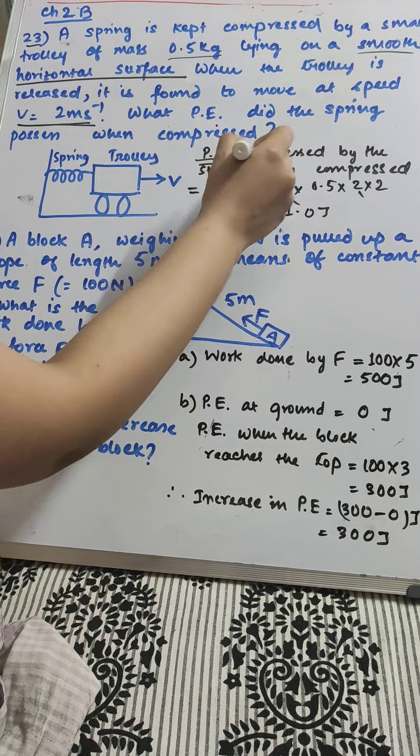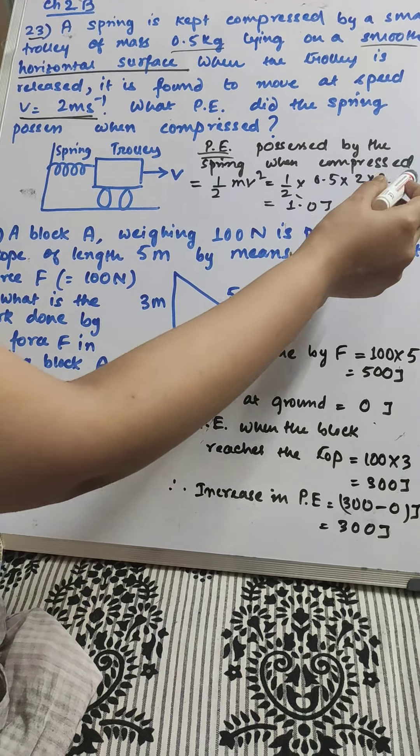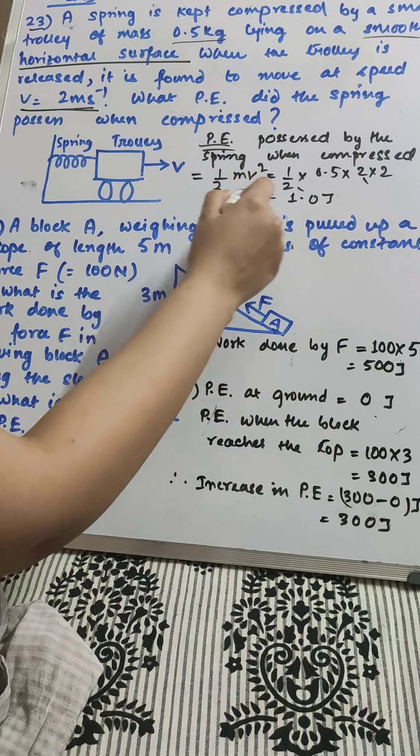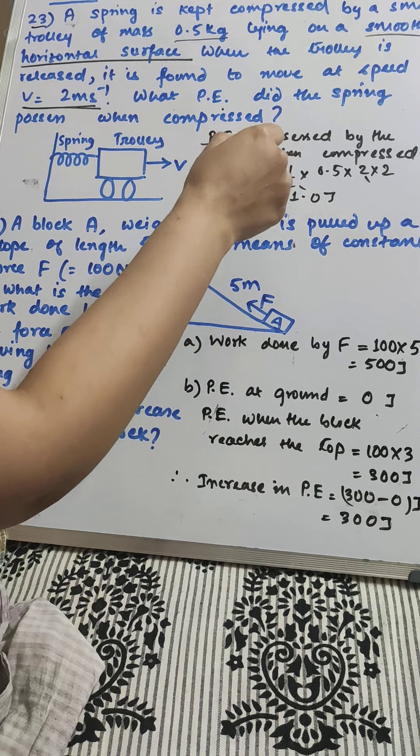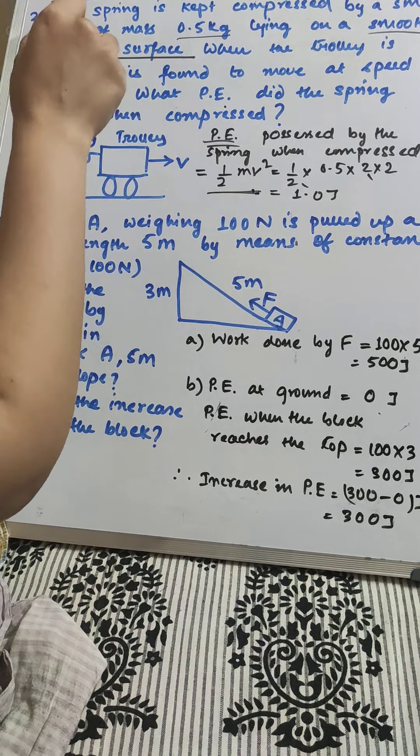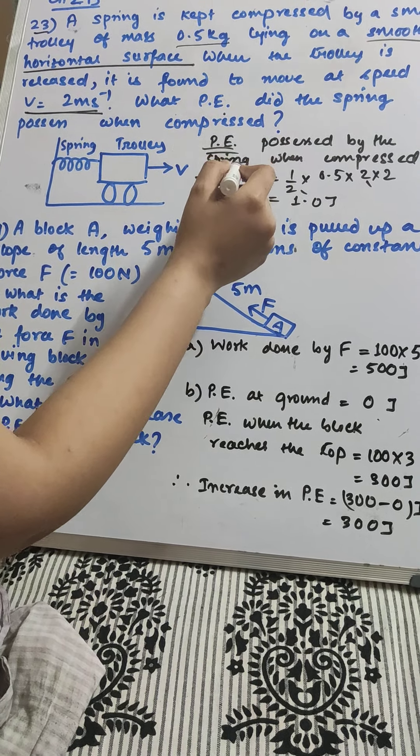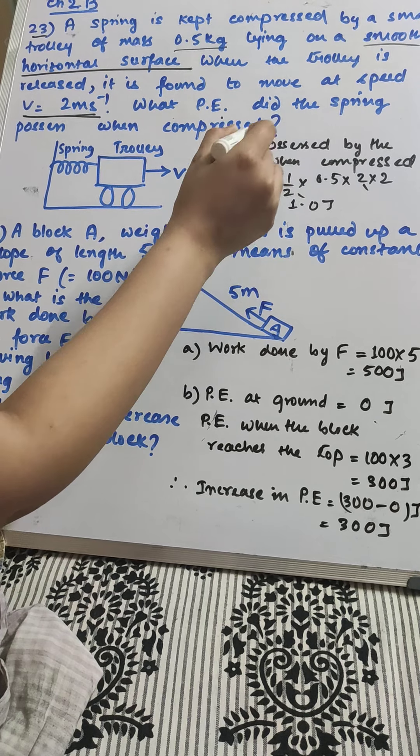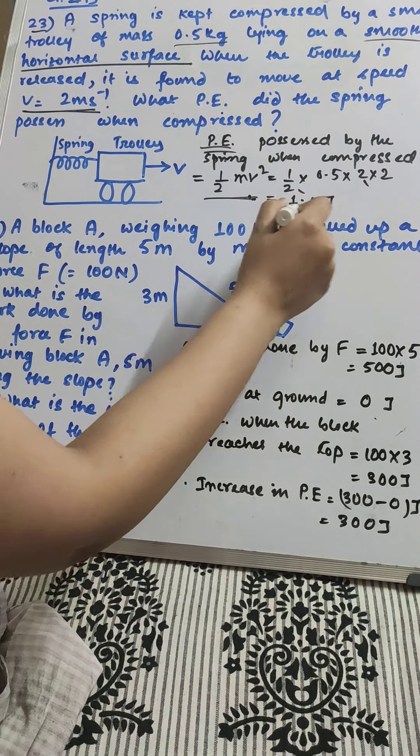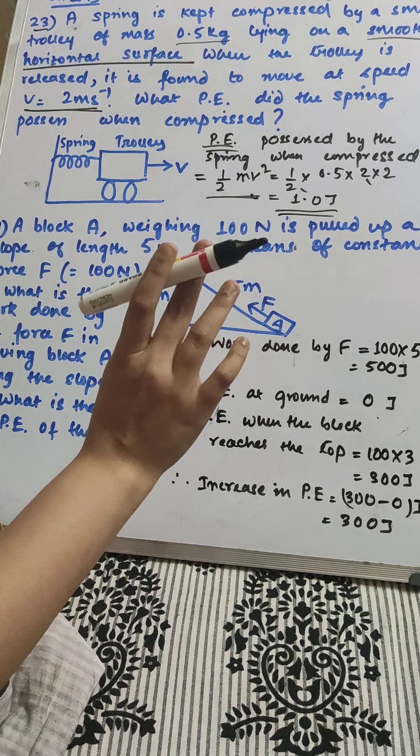The potential energy possessed by the spring when compressed is equal to the half mv squared, the kinetic energy the trolley will possess when it will move. We have just substituted the values: mass 0.5 kg, velocity 2 meter per second. Simple calculation, 1 joule is the answer.